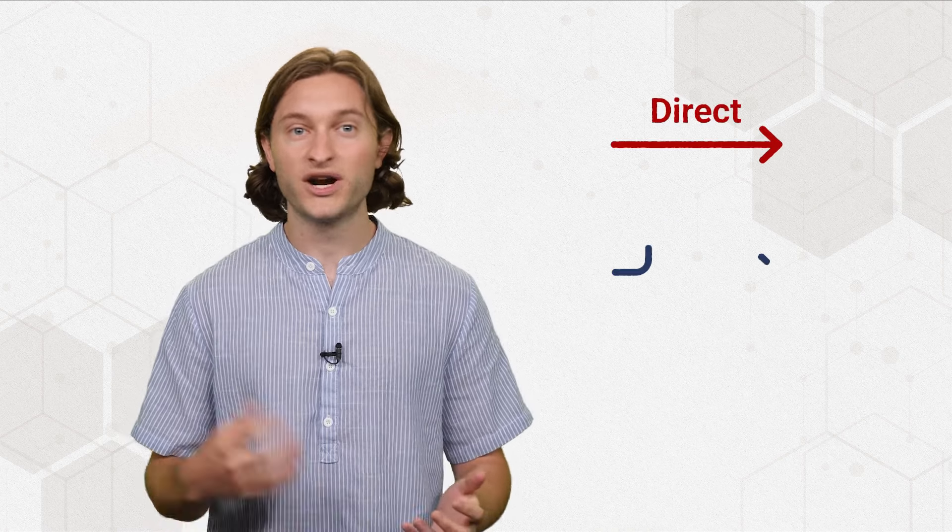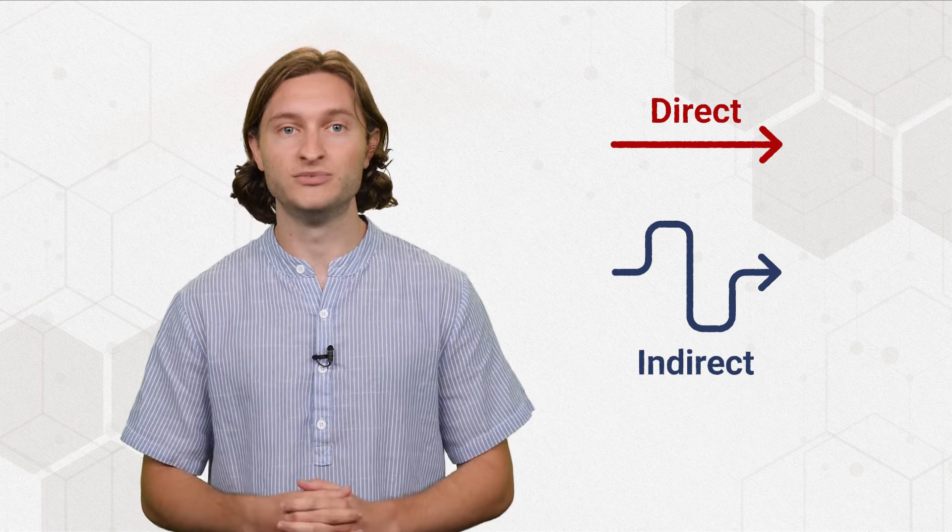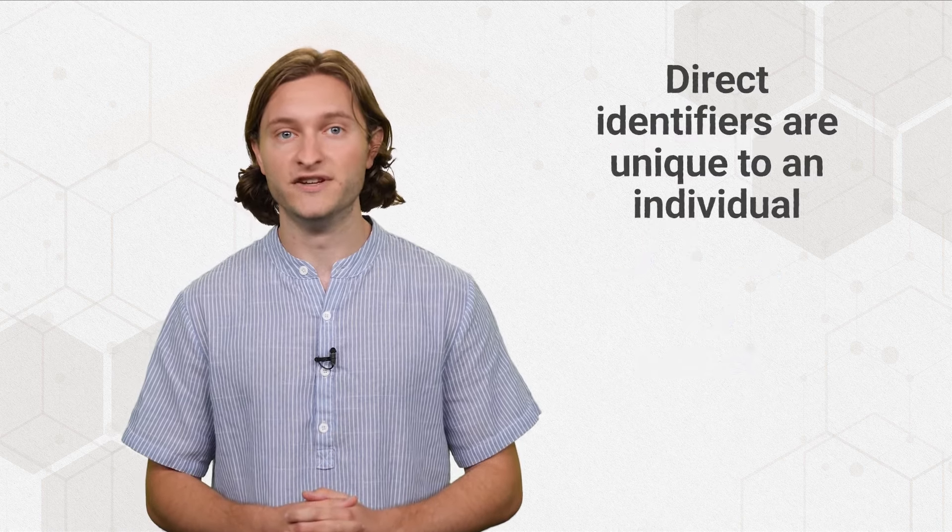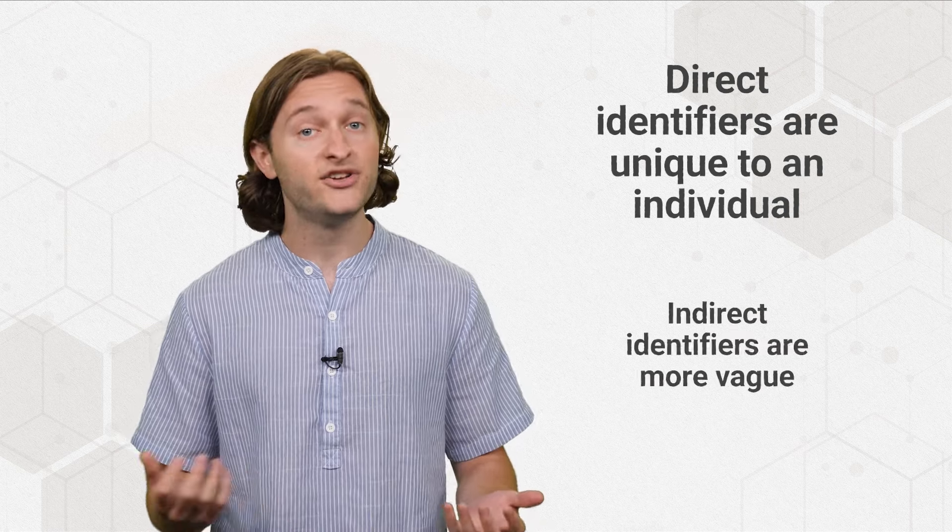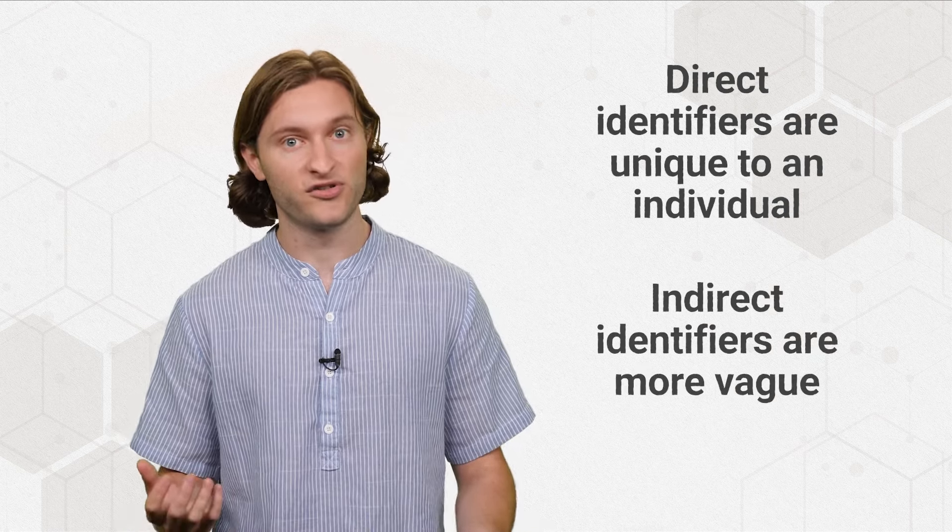The first step of de-identification is data tagging, labeling data elements as either direct or indirect identifiers, then choosing which are subject to de-identification. Direct identifiers are unique to an individual, like a person's name, while indirect identifiers are more vague, like a person's race.